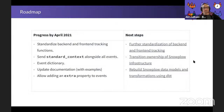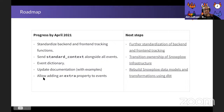As for our roadmap: progress by April 2021 includes standardized back-end and front-end tracking functions, a GitLab standard schema signed with all events, an event dictionary and generator for event definitions, updated documentation, and the ability to add extra properties to events. Next steps include further standardization of back-end and front-end tracking, transitioning ownership of Snowplow infrastructure, and rebuilding Snowplow data models and transformations using dbt to make querying easier.